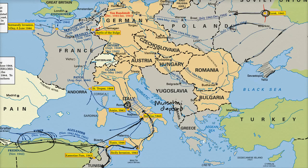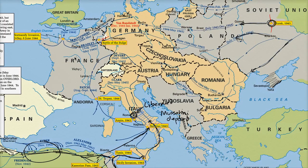Rome did not get liberated in 1943. The Allies had to continue bombing Rome, and it doesn't get liberated until June of 1944. Rome is liberated June 5th. The next day — and this is probably one of the most famous events in World War II, especially from an American point of view, something that's documented in many films — is June 6th, D-Day, 1944.